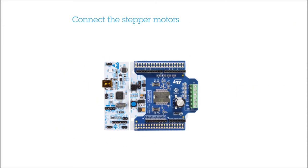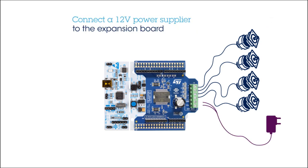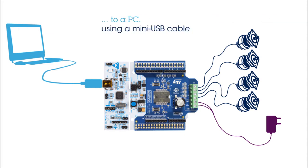Now, connect four unidirectional DC motors to the expansion board. Then, connect a voltage supply. In this case, we use a 12-volt supply. Then you can connect the STM32 Nucleo board to a PC using a mini-USB cable. And then, you are ready to power on.